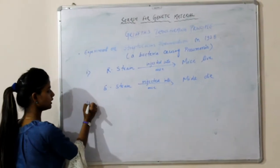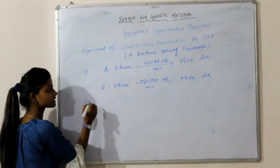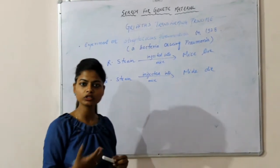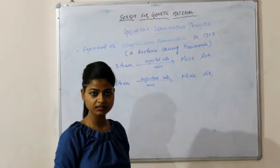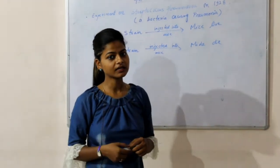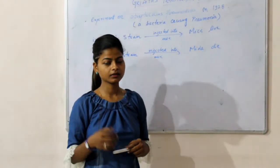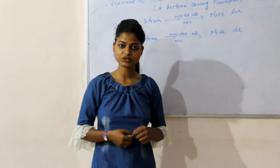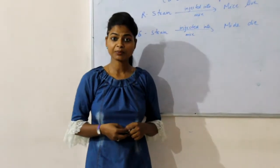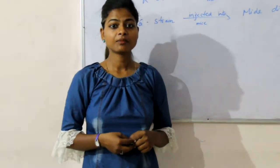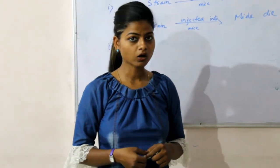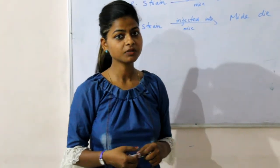Next, Griffith heat-killed both colonies of bacteria — R-strain and S-strain. When heat-killed R-strain and heat-killed S-strain bacteria were injected into mice separately, the mice lived and did not die or develop pneumonia.